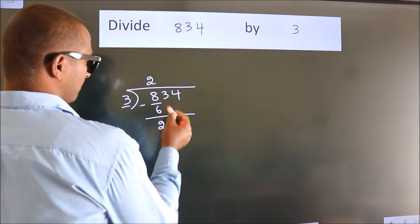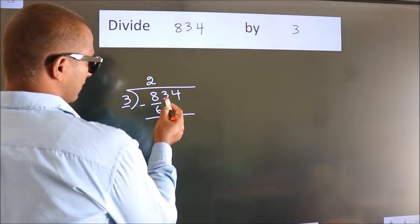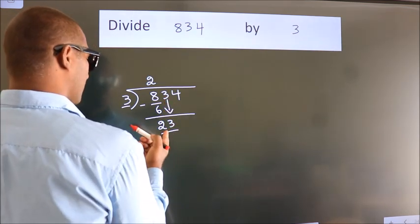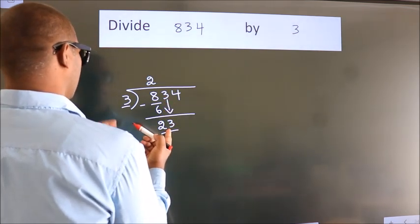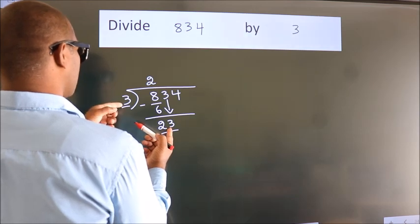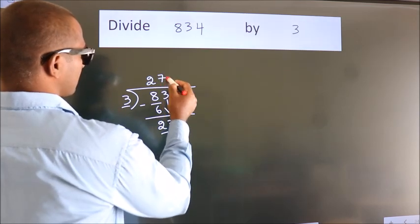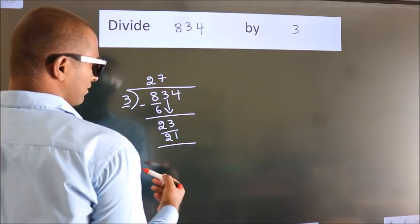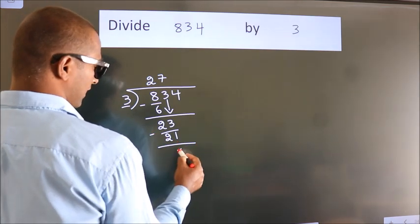After this, bring down the beside number. So 3 down. So 23. A number close to 23 in 3 table is 3 7s, 21. Now we subtract. We get 2.